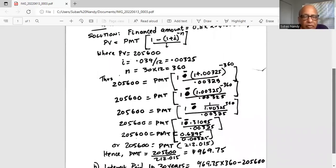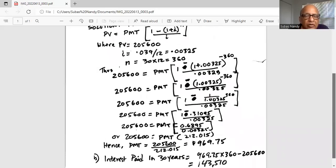So when we simplify the term in the numerator, inside the parenthesis is 0.6895 divided by 0.00325, which works out to 212.015.